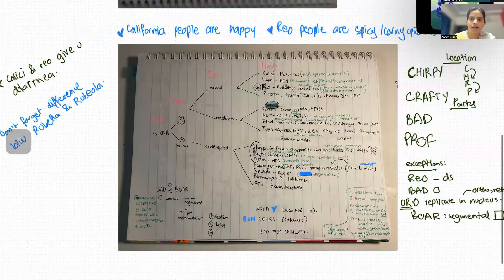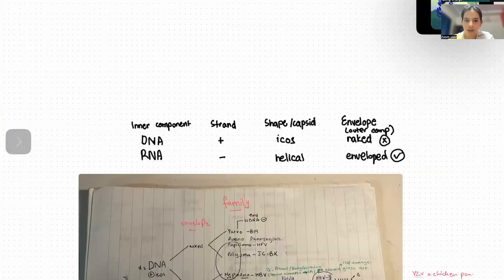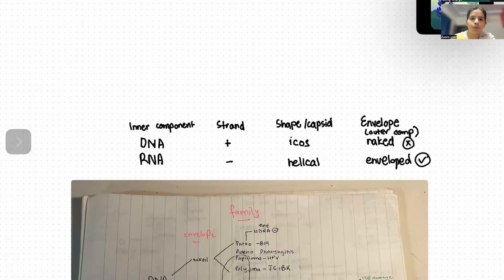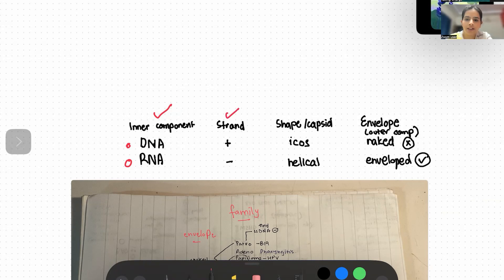So this is the chart. First of all, I will set the rules for the components. The inner component would be either DNA or RNA. They would have a positive strand or a negative strand. The shape or capsid would be either icosahedral or helical. And the outer component — the envelope — would be either not present or present.